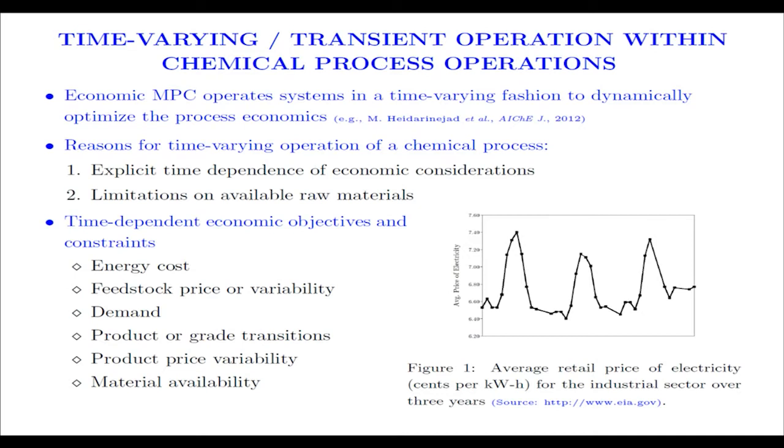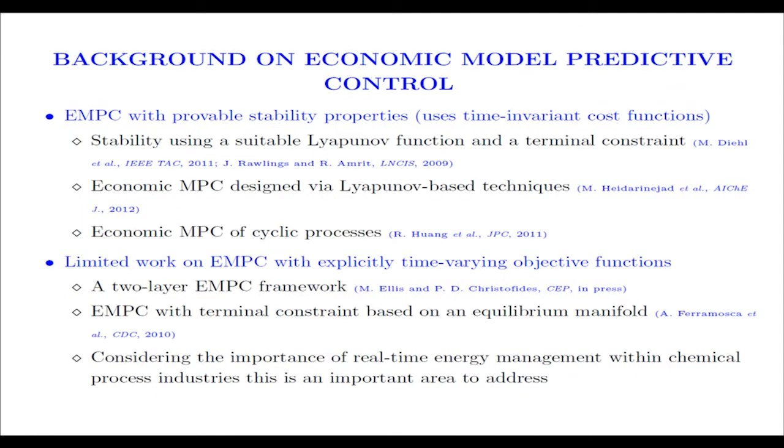We consider two main reasons for why you'd want to operate a system in a continuously dynamic operating fashion. First, explicit time dependence of economic considerations. Here I plotted out the energy cost, the average energy cost with time. You can see it's very much a function of time. The second one is a limitation on raw materials. We only have so much material that we can feed to our process. How do we best distribute that to the process to maximize our profit?